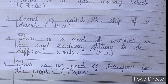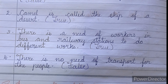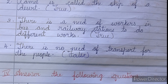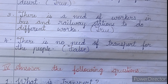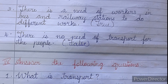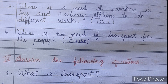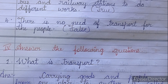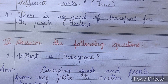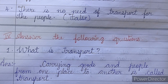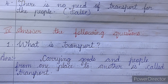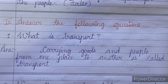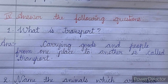Third main: Write true or false for the following. Number one: Truck is a fast moving vehicle — False. Number two: Camel is called the ship of a desert — True. Number three: There is a need of workers in bus and railway stations to do different works — True. Number four: There is no need of transport for the people — False.